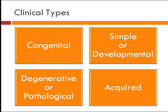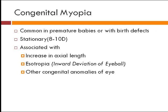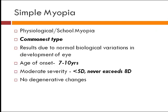The clinical types of myopia include: congenital, simple or developmental, degenerative or pathological, and acquired. Congenital myopia is present in premature babies and may be associated with other birth defects. The refractive error is usually 8 to 10 diopters and is stationary — it will not increase with age. It may be associated with increased axial length, esotropia, or other eye abnormalities. Simple myopia is a physiological or school-going myopia, the commonest type, resulting from normal biological variations in development of the eye, typically starting around age seven.